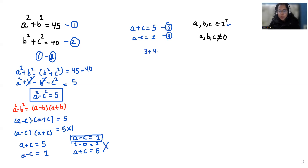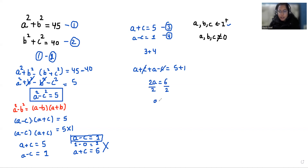I am going to add both equations 3 and 4. So a plus c plus a minus c is equals to 5 plus 1. The c terms cancel out, giving 2a equals 6. Dividing both sides by 2, a is equals to 3.